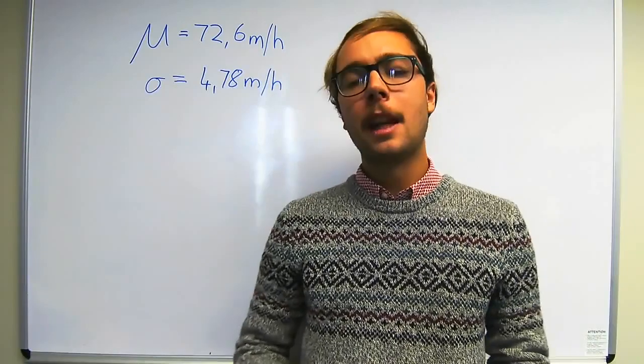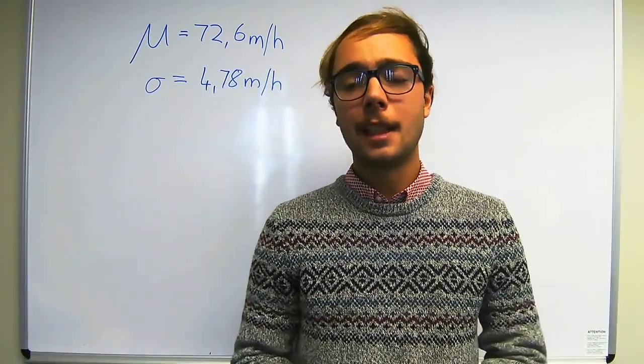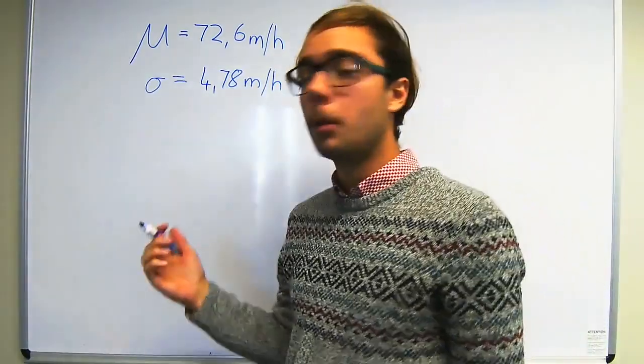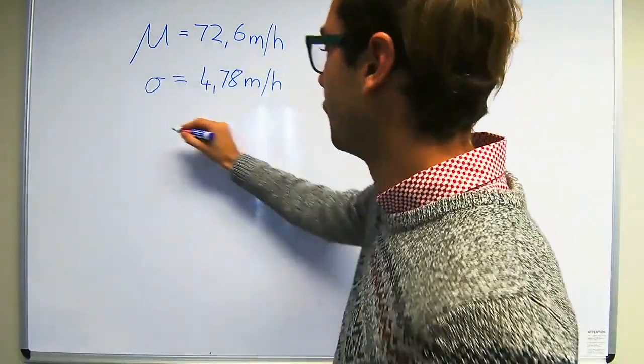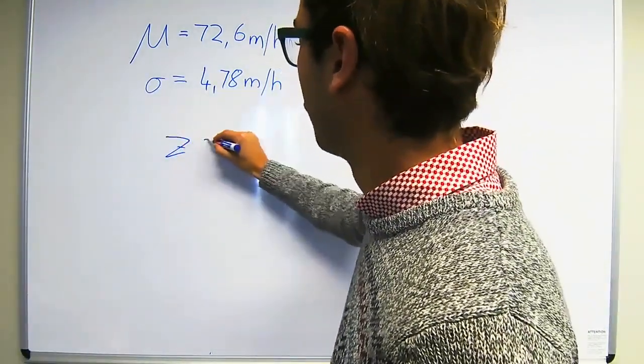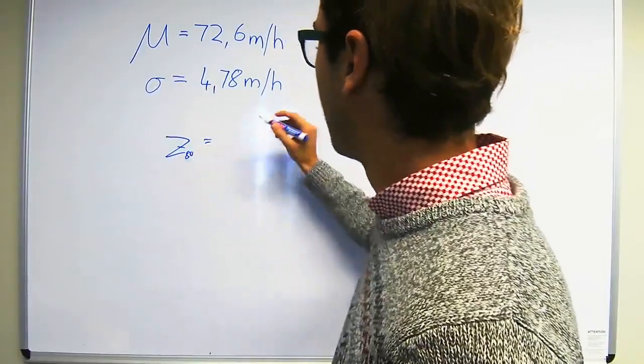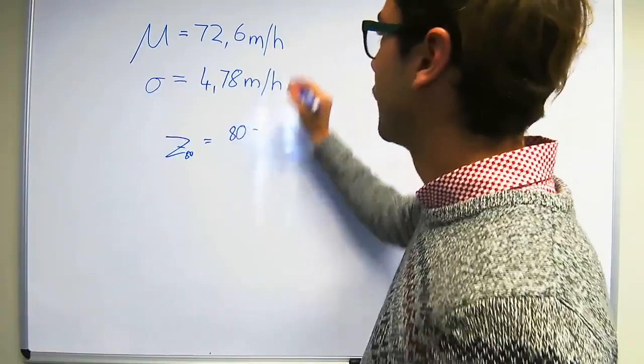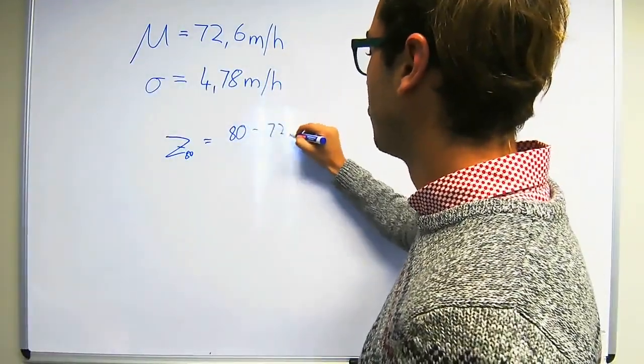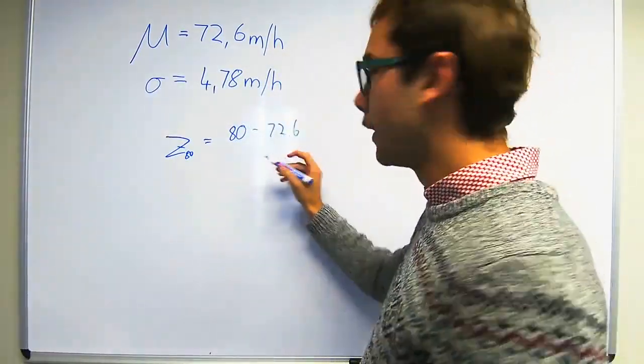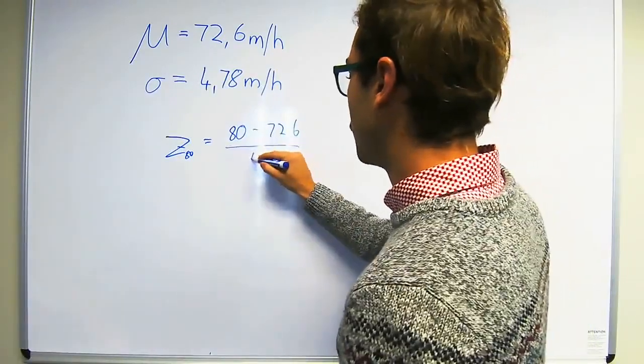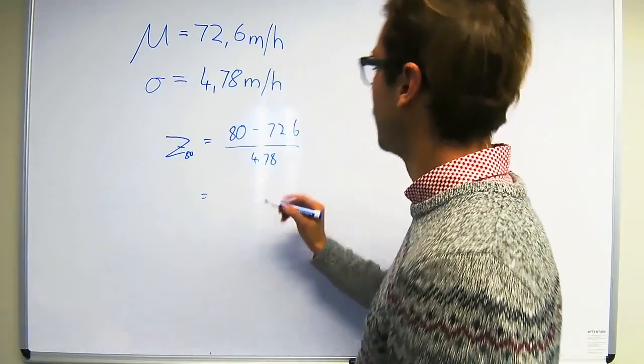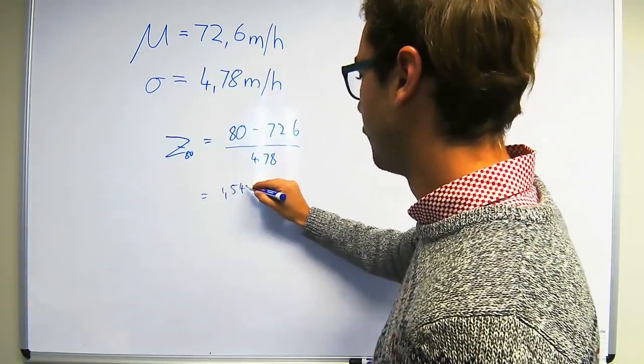Beginning with the first question, what percentage of passenger vehicles travel slower than 80 mph? Because this is nearly normally distributed we can use the Z-value. Our Z-value formula for 80 mph says our observation which is 80 minus our mean which is 72.6 over the standard deviation which is 4.78 and that gives us a Z-value of 1.548.